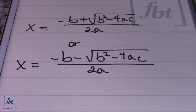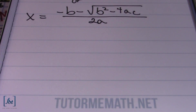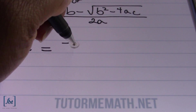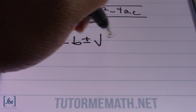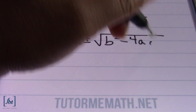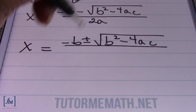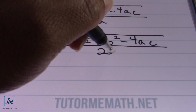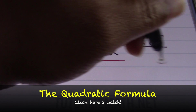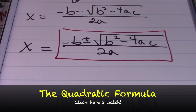Here are our two halves of the quadratic formula. All we have to do now is combine them together to get negative b plus or minus the square root of b squared minus 4ac all divided by 2a. And there it is — there's our proof for the quadratic formula.